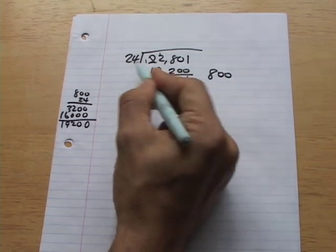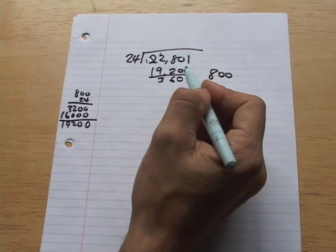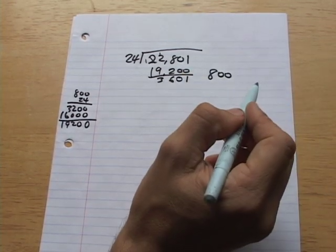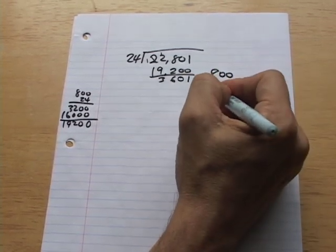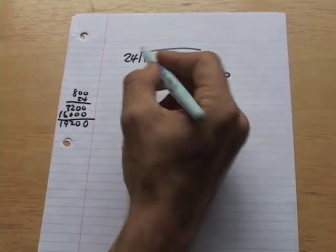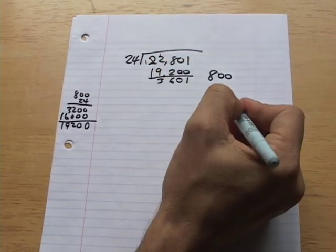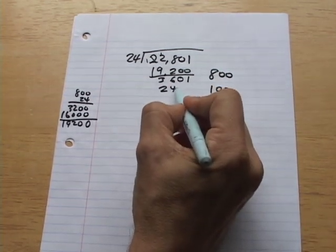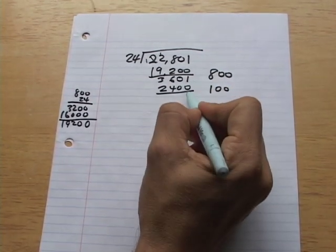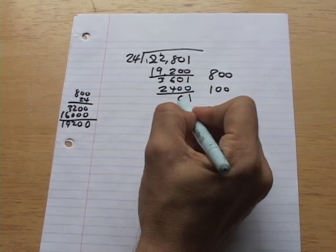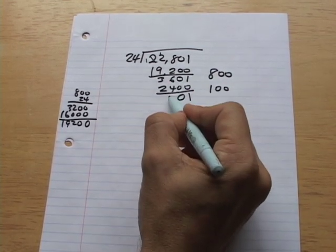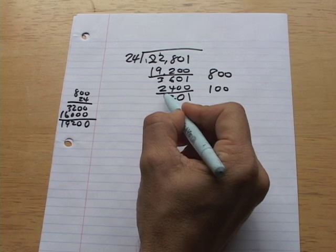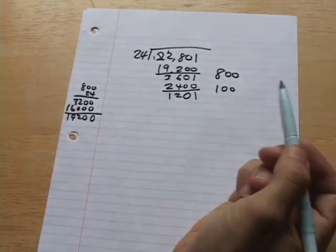So now we're going to look at 3601. How many times does 24 go into 3601? I don't know. 24 times 100. Let's try that. That's a nice, round, even number. And of course, 24 times 100. You just add two zeros on to 24. And you get 2400. Then you subtract 1 from 0. You get 1. 0 from 0. You get 0. 6 minus 4. You get 2. And 3 minus 2. You get 1.